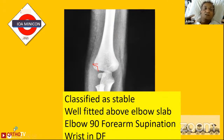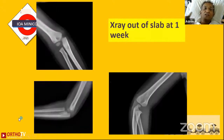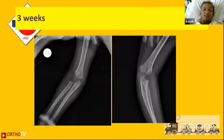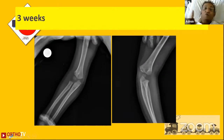Call the patient after one week and confirm everything is good. Take AP, lateral, and oblique views. If everything is good, this fracture is not going to displace further. Apply a proper plaster with wrist in extension, elbow flexed, forearm in supination. Call the patient at four weeks for a final X-ray — three weeks in a younger child, four weeks in an older child.